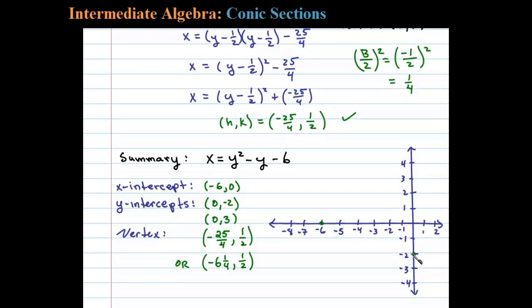Okay, so 0 comma negative 2 is here and 0 comma 3 is there. Here now the vertex we found was negative 25 fourths or negative 6 and a quarter comma 1 half, so negative 6 and a quarter is about right there. Let's go ahead and label that.